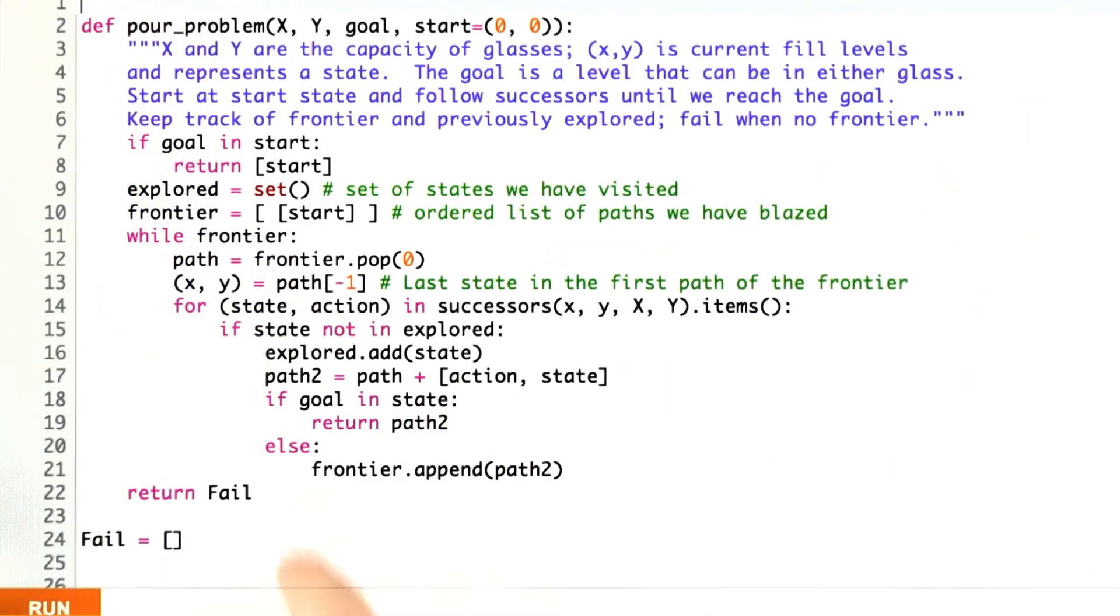Here's my solution. It's a little bit complicated, so let's go through it step by step. I'm saying the input to this pour_problem function are x and y, which are the capacity of the glasses. I'm using capital X and Y for that.